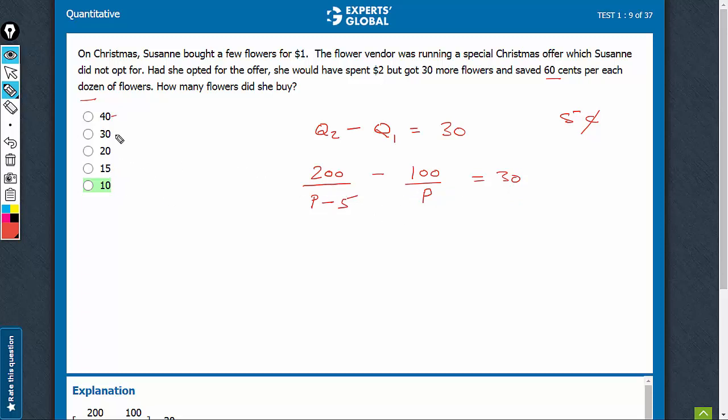See, such bigger values are, of course, not going to be possible, because we are looking for 100 upon P as the first quantity that she actually bought. So, for 100 upon P to be such a big number, 40, P will have to be really small, and then 5 could not be subtracted from P.